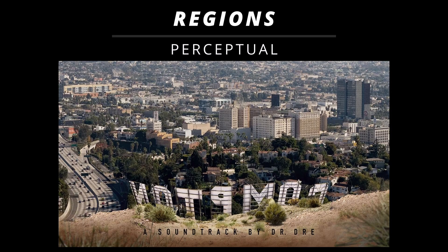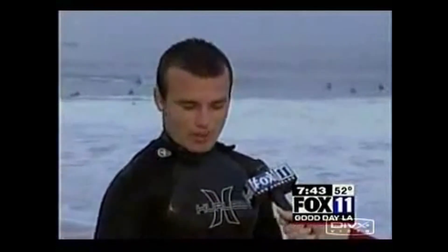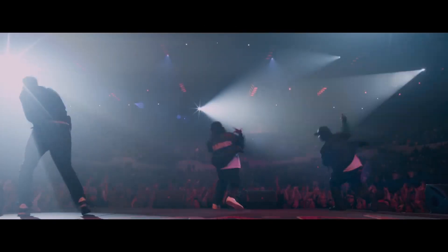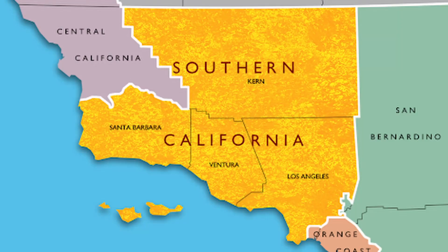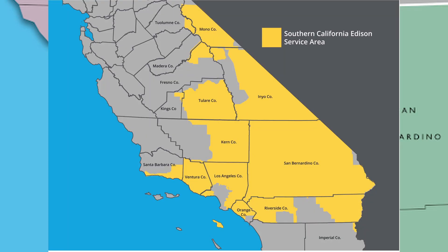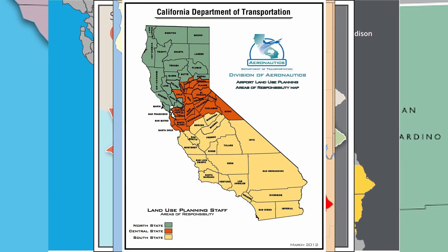Finally, there are perceptual regions, which are cultural and created by people's feelings and attitudes. Take SoCal, for example — when you think of SoCal, you think of beaches, surfers, and perhaps straight out of Compton. However, where are the boundaries of SoCal? Is it this map, or this one, or another? This is where people will have conflicting opinions, and thus it is a perfect example of a perceptual region.